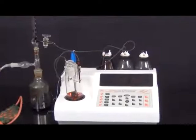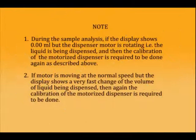When exactly 10 ml of KF reagent has come out from the burette, press the stop key. The display shows 'KAL Done'. Calibration of the motorized dispenser is needed in two cases: first, if during sample analysis the display shows 0.00 ml but the dispenser motor is rotating and liquid is being dispensed; second, if the motor is moving at normal speed but the display shows a very fast change in the volume of liquid being dispensed.